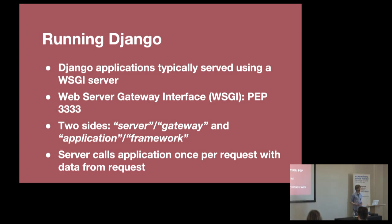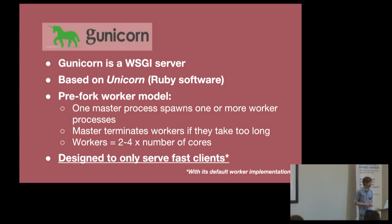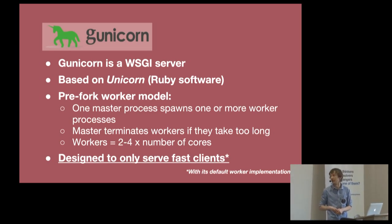Running Django, you typically deploy it using a WSGI server, which stands for the Web Server Gateway Interface, defined in PEP 3333. WSGI basically defines two sides: the server and gateway side, and the application framework. The server receives requests and calls the application with data from the request - literally just like a Python function call. Gunicorn is such a WSGI server. It's quite popular, based on some Ruby software called Unicorn, and it has this pre-fork worker model where one master process spawns some worker processes. The worker processes actually serve the requests, and the master is pretty brute force - it terminates a worker if it takes too long.